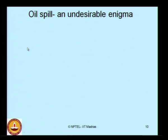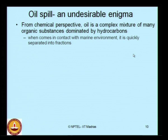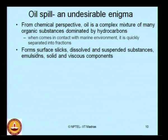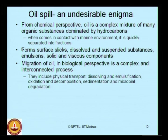Oil spill is an undesirable phenomenon in marine pollution. From a chemical perspective, oil is a complex mixture of many organic substances dominated by hydrocarbons. When they come into contact with the marine environment, oil quickly spreads and separates into fractions — forming a surface slick first, then getting dissolved, remaining as suspended substances, becoming emulsions, or having solid and viscous components settle on the sea floor. Oil thus exists in different physical states: surface slicks, dissolved components, suspended substances, settled components, and emulsions.